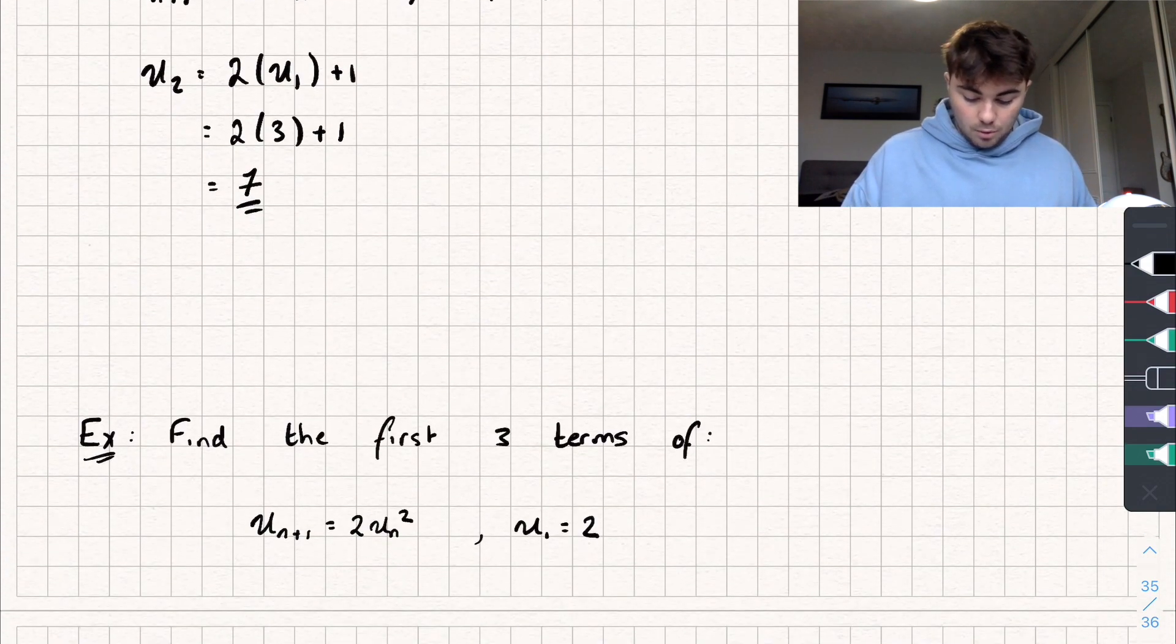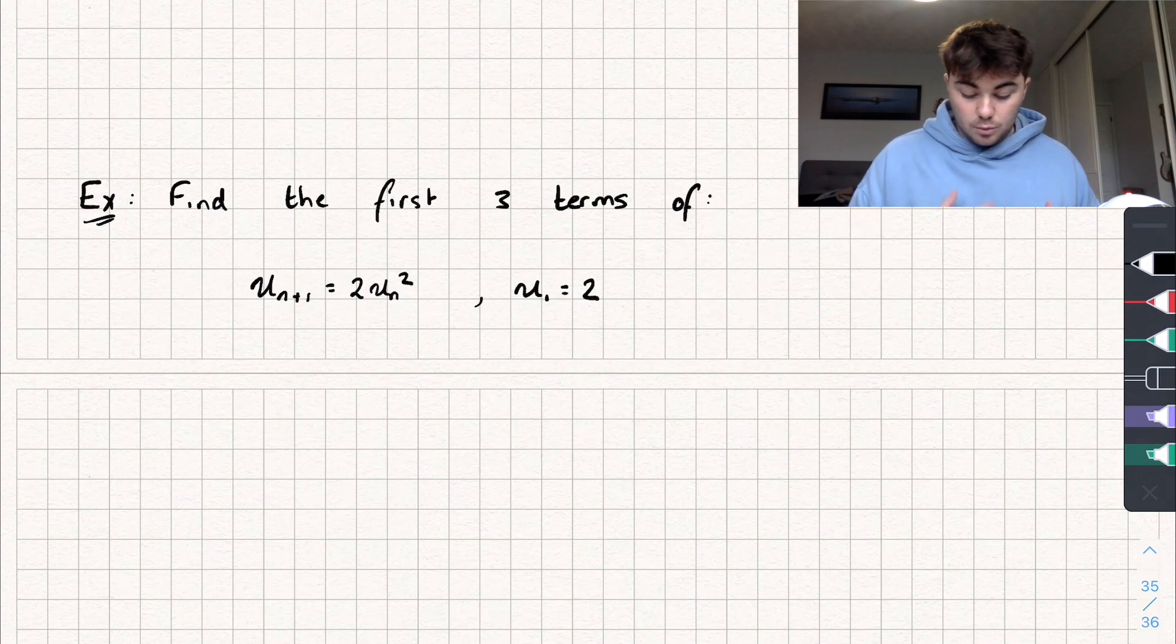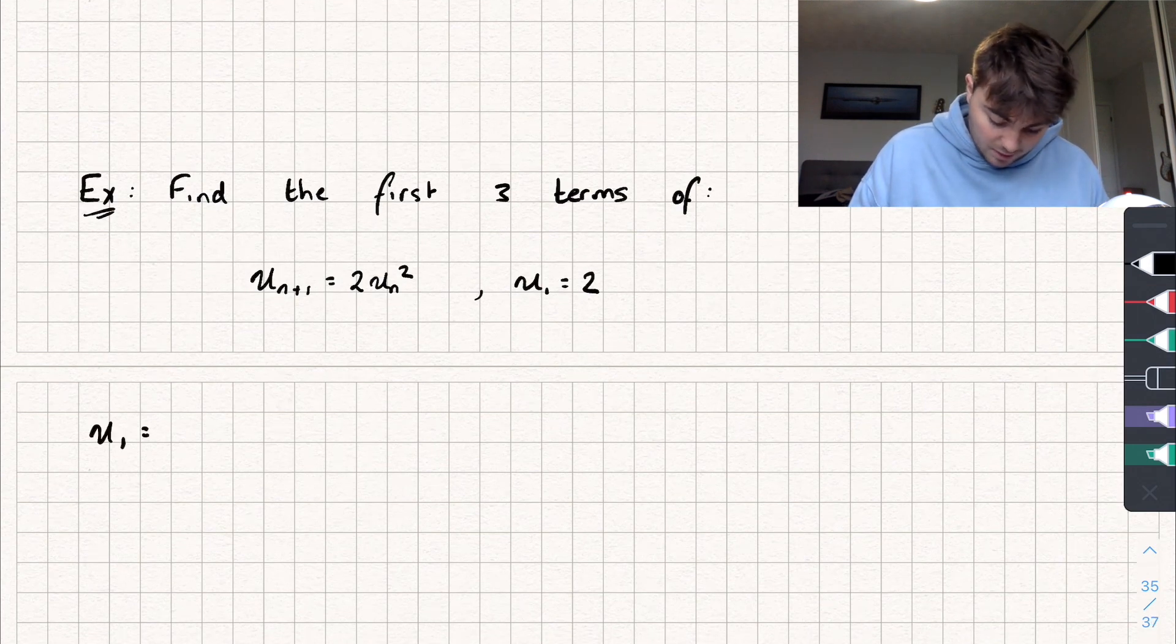So let's look at an example question. It says, find the first three terms of u_{n+1} equals two multiplied by u_n squared with u_1 equaling two. To find, well, we have the first term, u_1, that's equal to two.